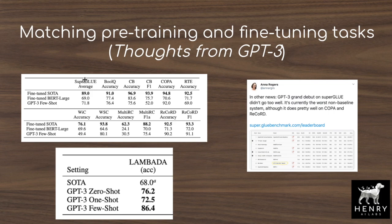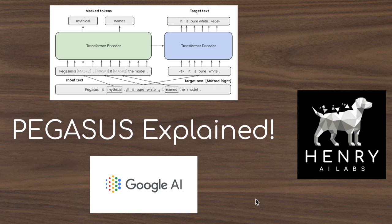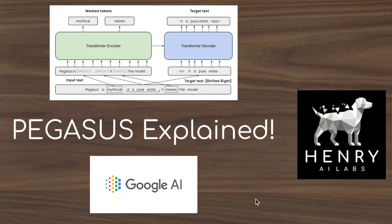In summary, Pegasus's gap sentence generation pre-training task performs better when fine-tuned for abstractive summarization. Key implementation details include decoding only the masked-out sentence (as inspired by T5) for computational efficiency, the ratio of sentences masked out, the difference between C4 and HugeNews pre-training data, and the large performance gains in low-resource settings with just 100 or 1,000 labeled examples—critical because constructing large labeled summarization datasets is often impractical.